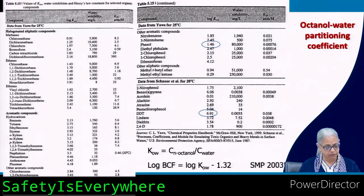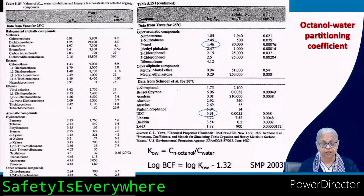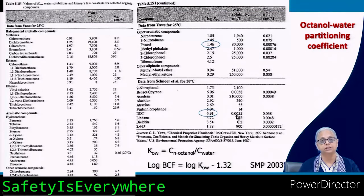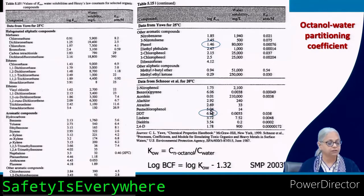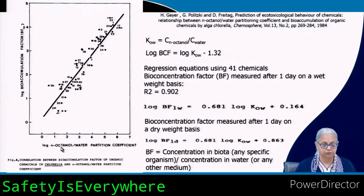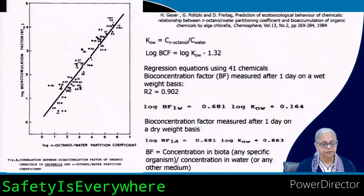Take phenol as an example — it's highly soluble in water, has a low Kow very close to one. Now look at DDT: its water solubility is only 5.5 micrograms per liter, it's a well-known hydrophobic compound, and the log Kow value is extremely high at 6.9 — meaning 10 to the power of nearly 7 times more DDT dissolves in octanol compared to water.